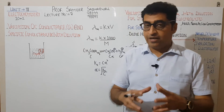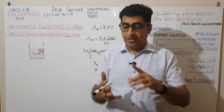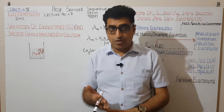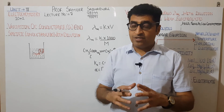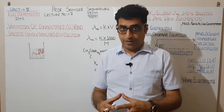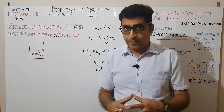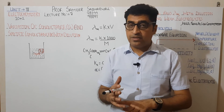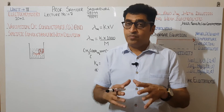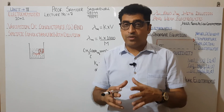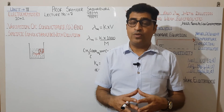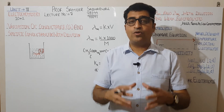In summary: conductance increases with dilution, both for weak and strong electrolytes, but the effect is greater for weak electrolytes because the number of ions is increasing. Specific conductance, however, decreases with dilution in both cases, whether weak or strong electrolyte, because the number of ions per centimeter cube decreases as the solution becomes more dilute.